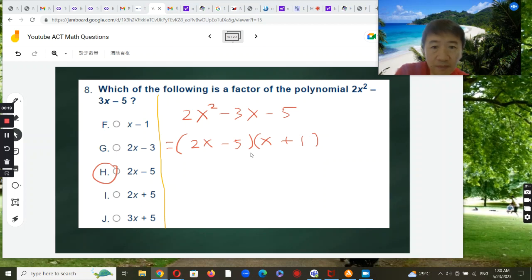We need to factor this into the product of two binomials. Let's see. We can break 2x into 2x and x here.